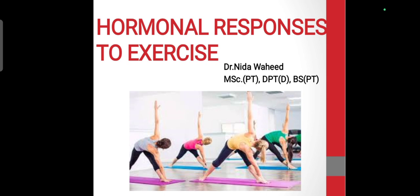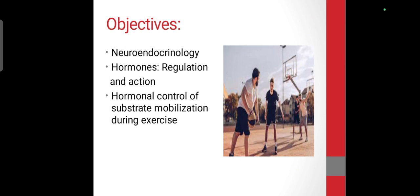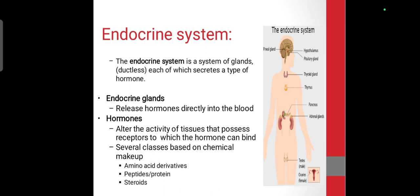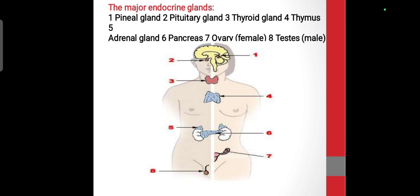Assalamu alaikum, I am Dr. Nida Vaheed and today I will discuss hormonal responses to exercise. This is part of an exercise physiology lecture. We will discuss neuroendocrinology and hormonal responses according to exercise. The endocrine system is a system of ductless glands, each of which secretes a type of hormone. Major endocrine glands include the pineal gland, pituitary gland, thyroid gland, thymus, adrenal gland, pancreas, ovaries in females, and testes in males.